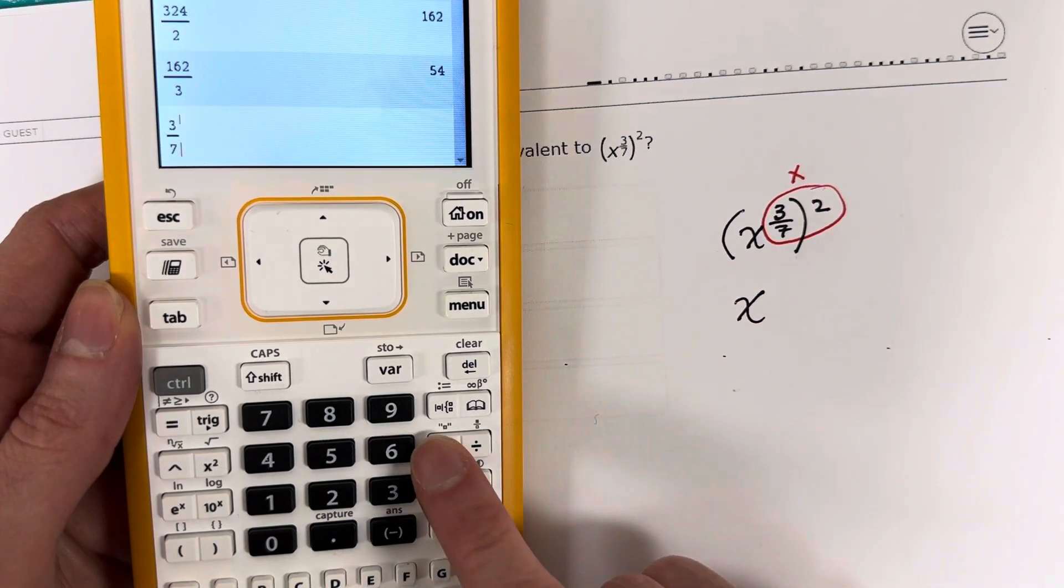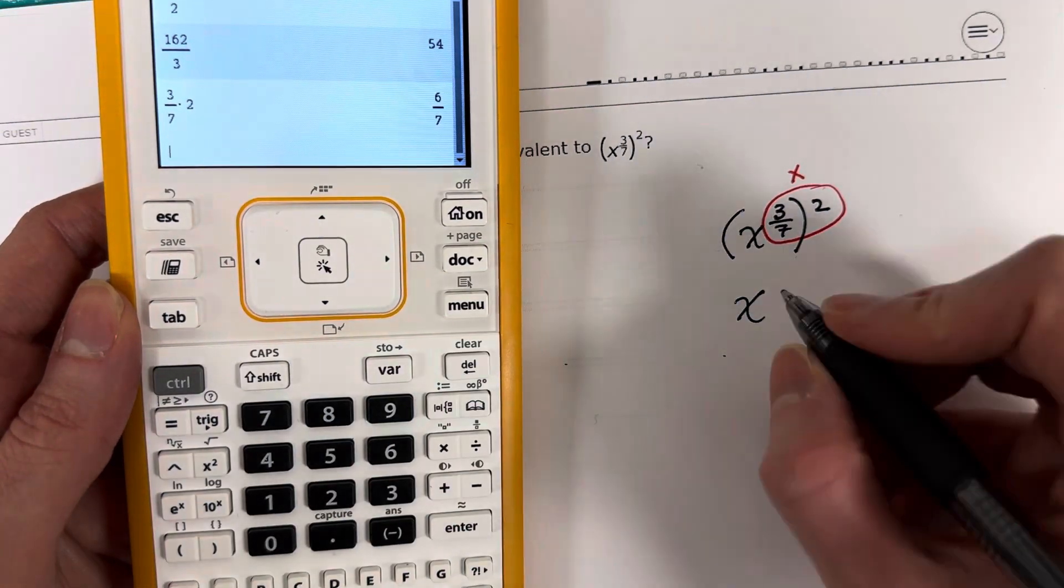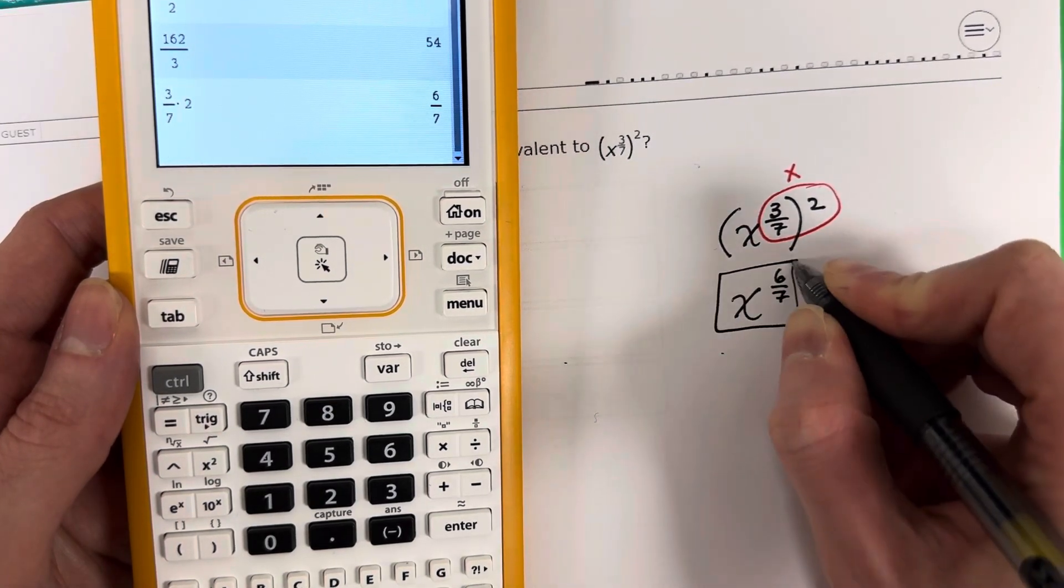Parenthesis means multiply. We're going to multiply 2. It's 2 and it's 6/7. This is your answer. So easy.